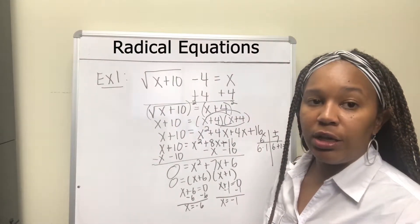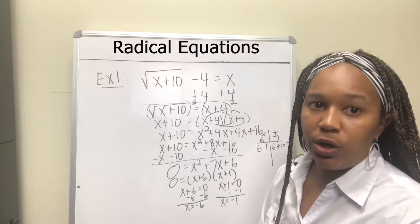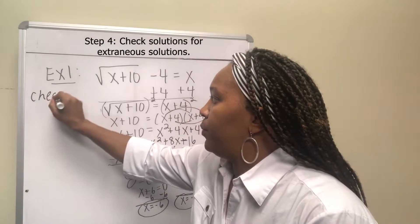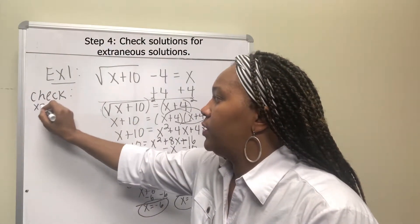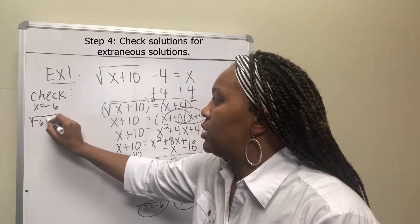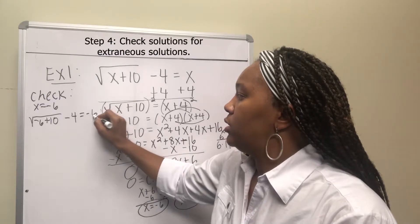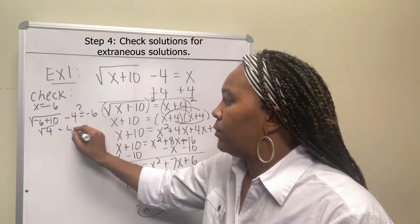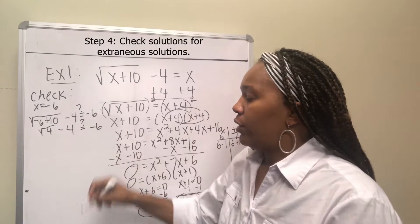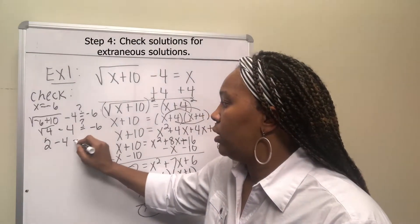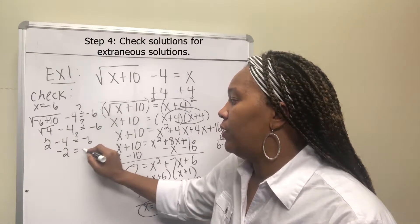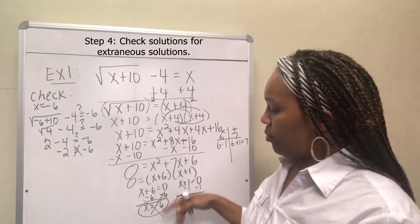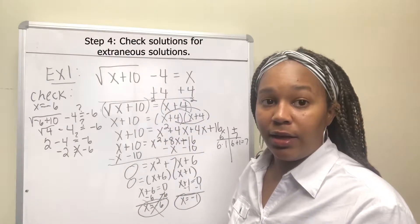The last step is to check your answers, because you can get extraneous solutions. Plugging negative 6 back into the original equation: negative 6 plus 10 is 4, the square root of 4 is 2, and 2 minus 4 is negative 2. Negative 2 does not equal negative 6, so negative 6 is an extraneous solution and is not counted as part of the solution.